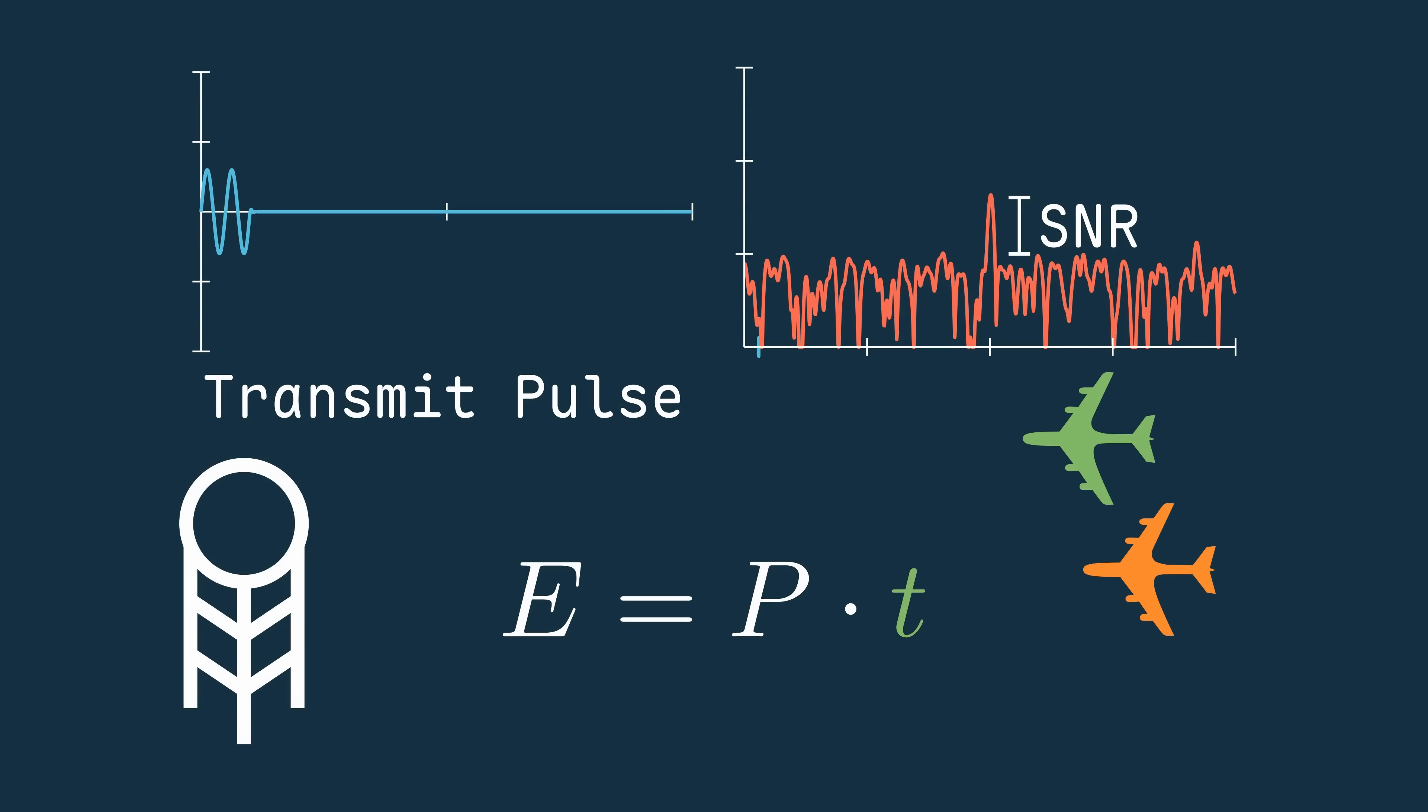The more time we transmit RF, the more clearly we can detect a target. And the more power we transmit, we also get a clearer signal.